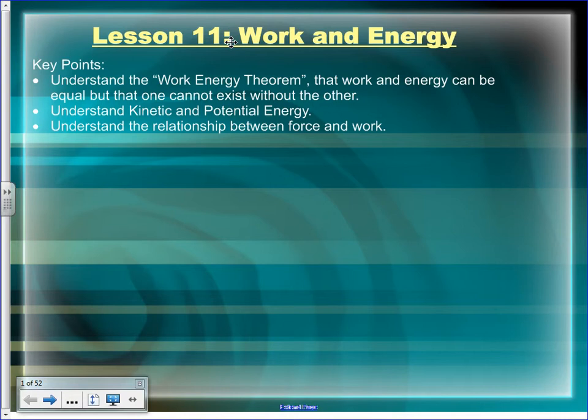Gravitational potential energy: you have it as long as you're not on the ground. Anytime you have the ability to fall, you have potential energy. There are other kinds of mechanical potential energy, like elastic potential energy — a stretched rubber band, bungee cord, or compressed spring would have that. Anything that can be stretched and tries to return to its original shape can have elastic potential energy. A bow and arrow is a prime example.